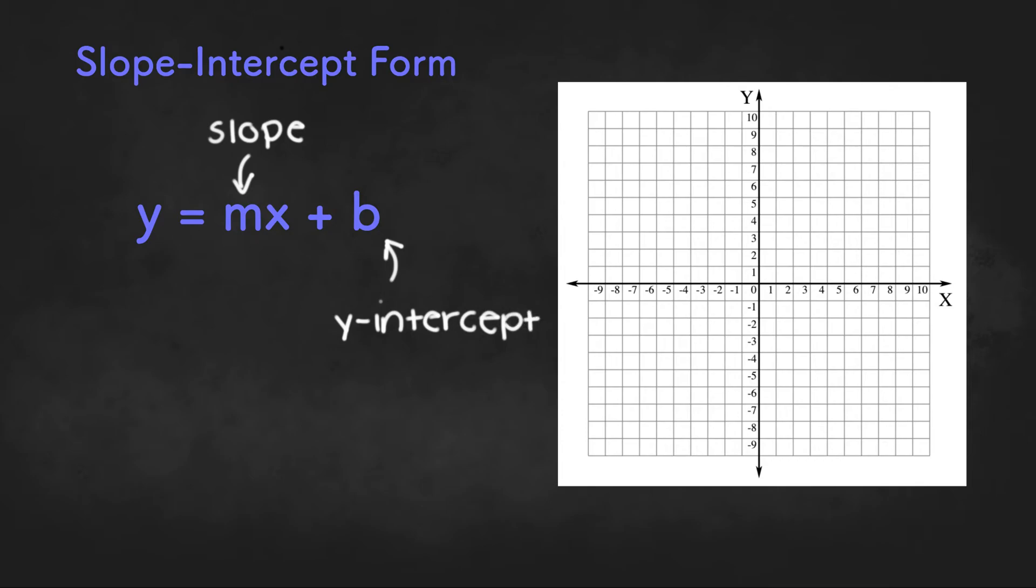Now basically, the y-intercept of a line is the point at which the line crosses the y-axis. So if a line looks something like this right over here, it crosses the y-axis at the point 3. So 3 would be the y-intercept.